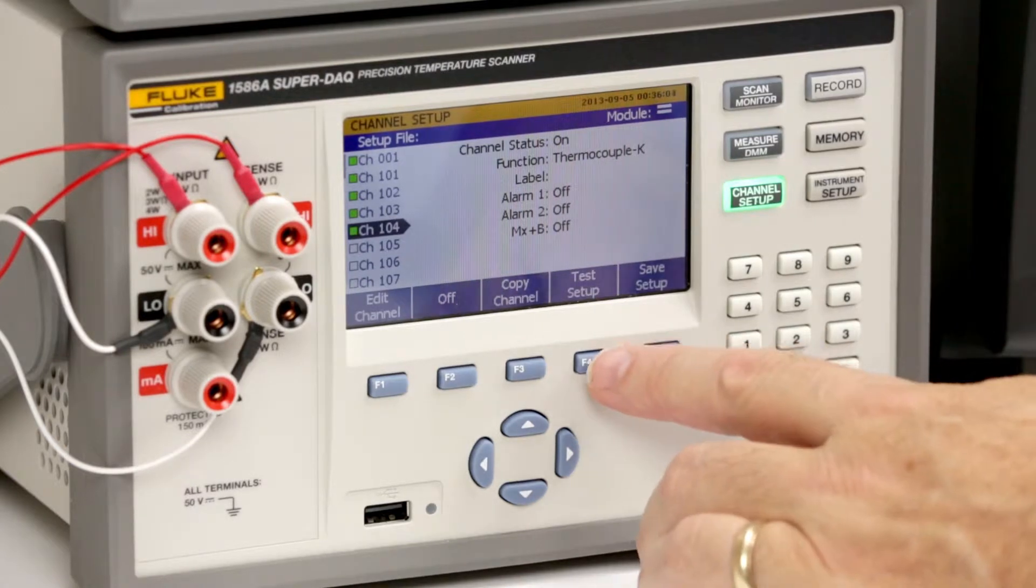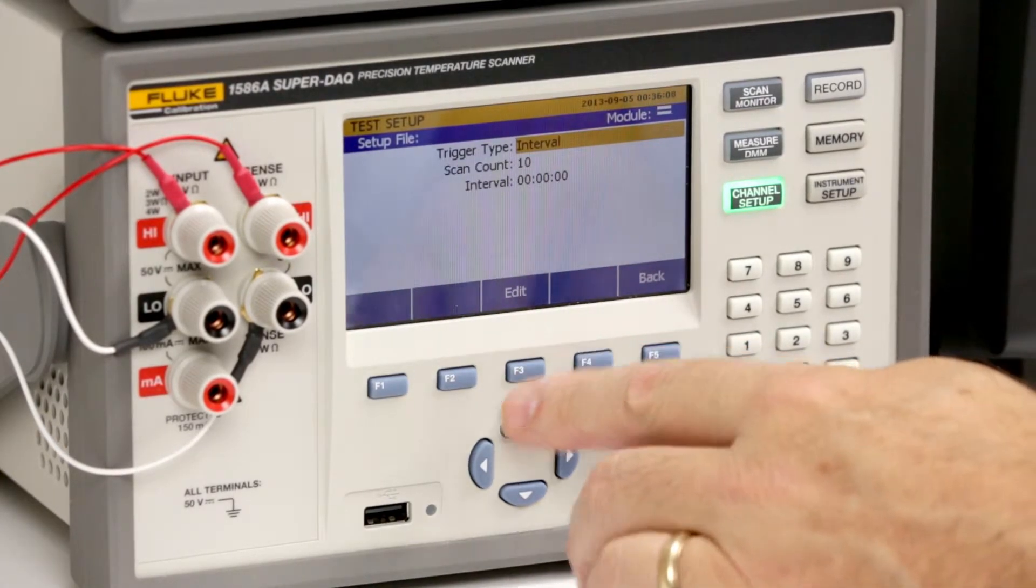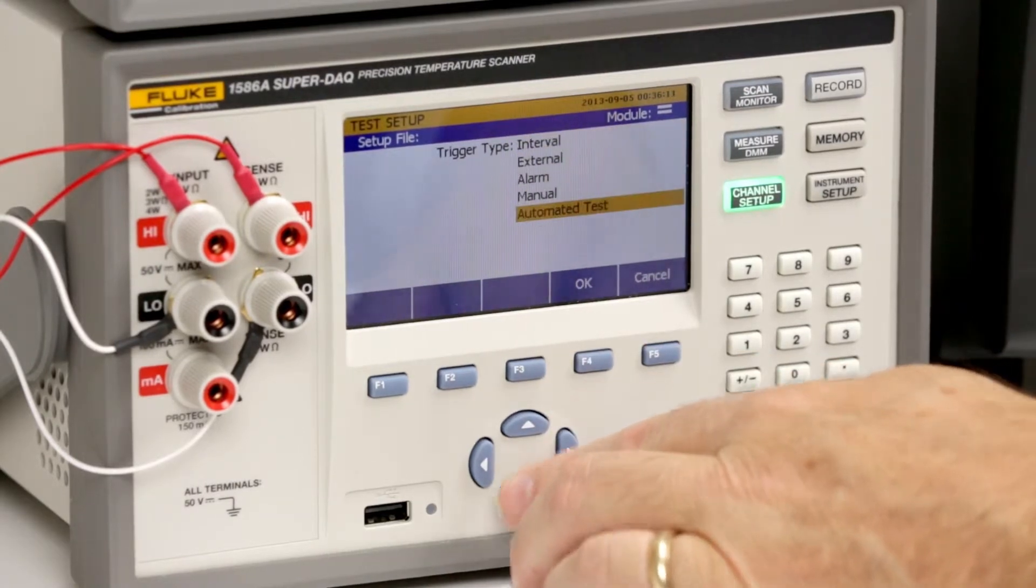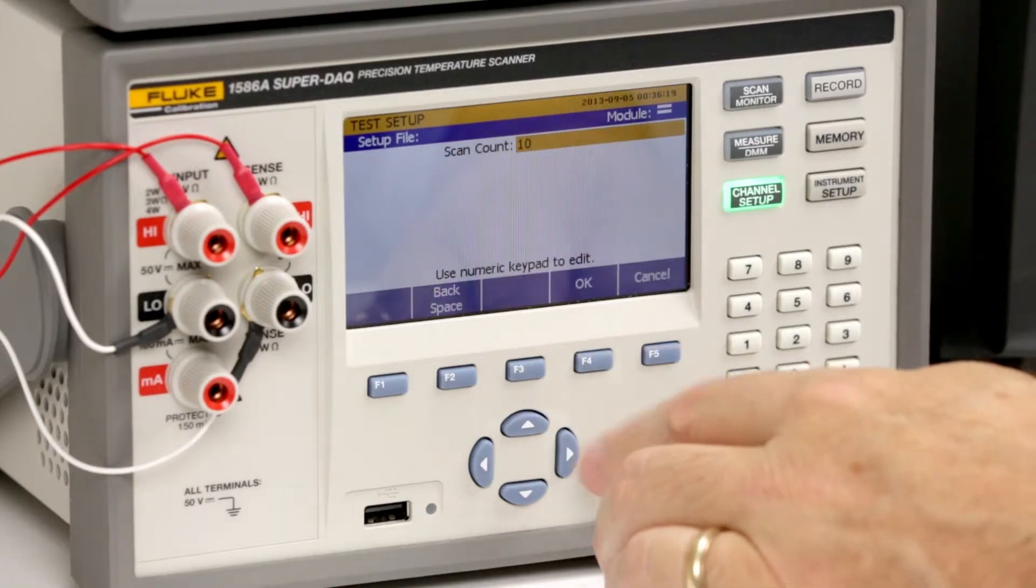Then press test setup. Change the trigger type to automated test. Enter a scan count of 30.